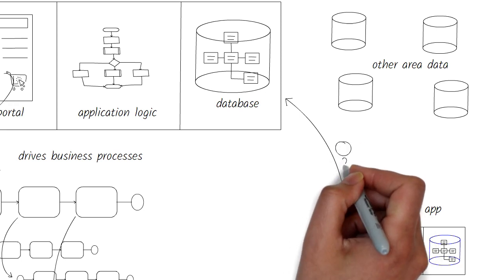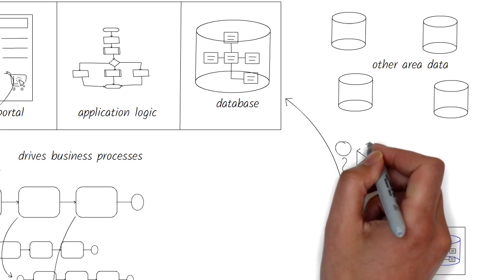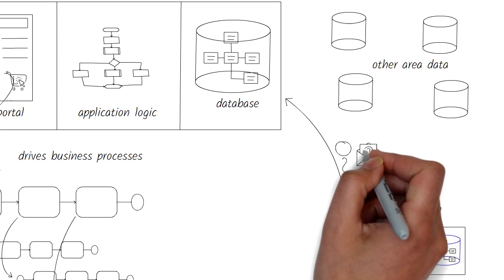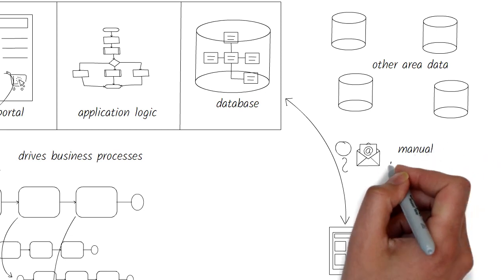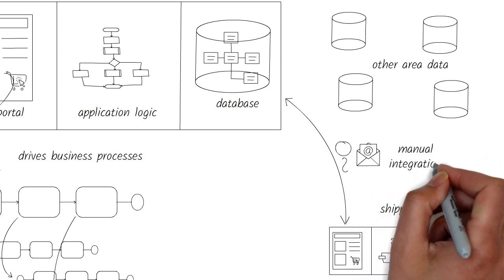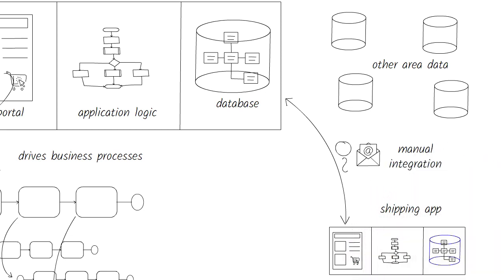The simplest option is to use a human to read information from one system and manually retype it into the other. In the customer shopping example, when a notification arrives in the form of an email to an agent, she reads the content of the email and updates the shipping system. As you can tell, this way of doing things is error prone and inefficient.